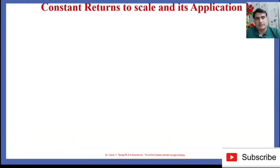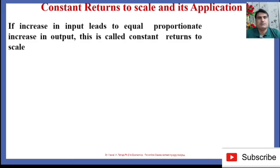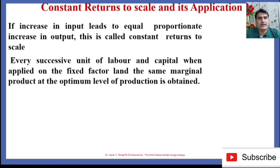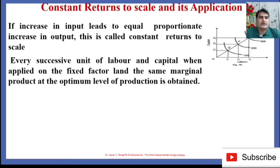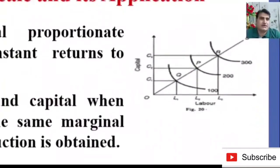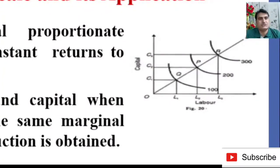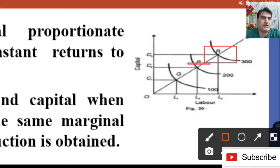We are talking about constant returns to scale and its applications. How can we define constant returns to scale? It means if an increase in inputs leads to an equal proportionate increase in output, this is called constant returns to scale. Every successive unit of labor and capital, when applied on the fixed factor land, yields the same marginal product at the optimum level of production. In the diagram, labor is shown on the x-axis and capital on the y-axis. By applying different units of labor and capital, we get the same level of output. The marginal production is 200 minus 100 = 100, 300 minus 200 = 100 — the marginal production remains the same throughout the production.